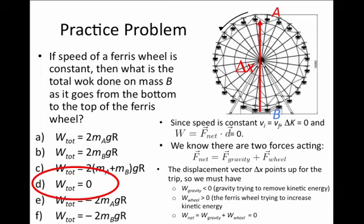If you think intuitively, if you were the object moving upward, gravity is working against you, trying to slow you down or remove kinetic energy. The wheel is exerting a force trying to speed you up in that direction. The fact that these two forces are exactly equal and opposite, because we're moving at constant speed,